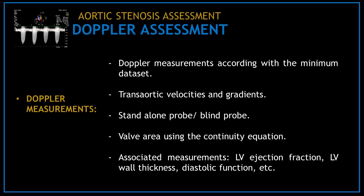The second category is the Doppler assessment. Perform Doppler measurements according to the minimum data set to obtain trans-aortic velocities and gradients. Also use the blind probe on every patient and calculate the valve area using the continuity equation. Don't forget to obtain associated measurements like ejection fraction, left ventricular wall thickness, and diastolic function.